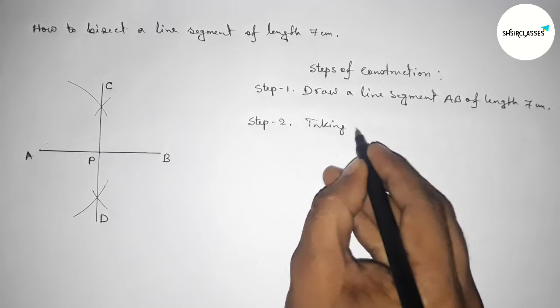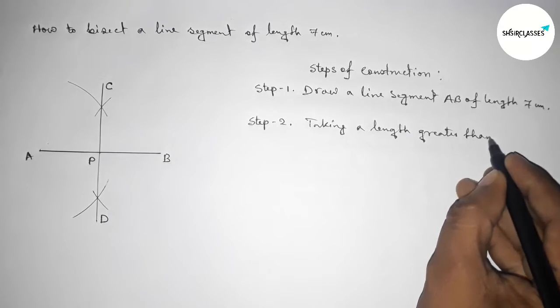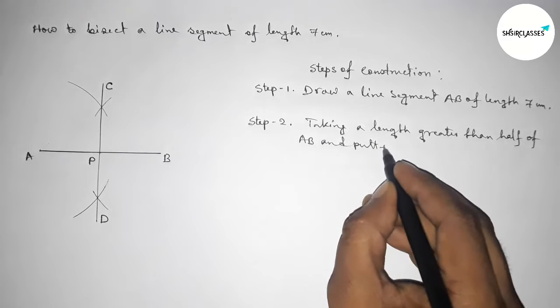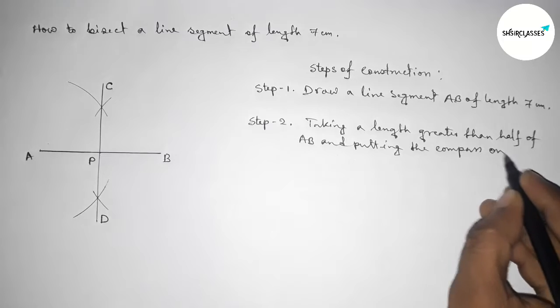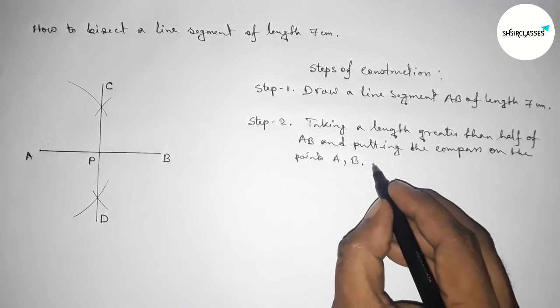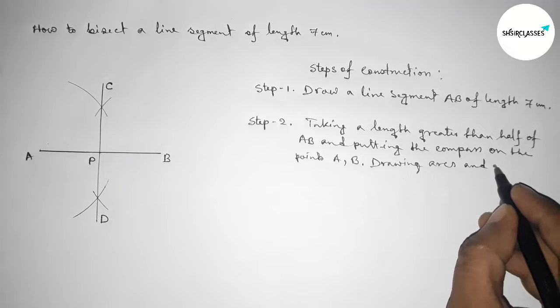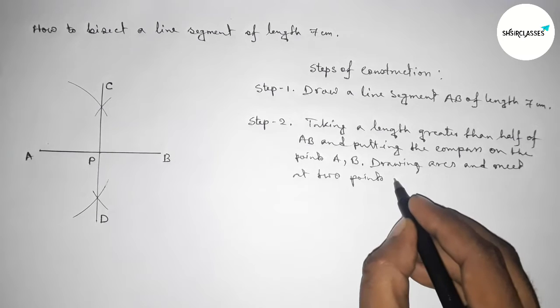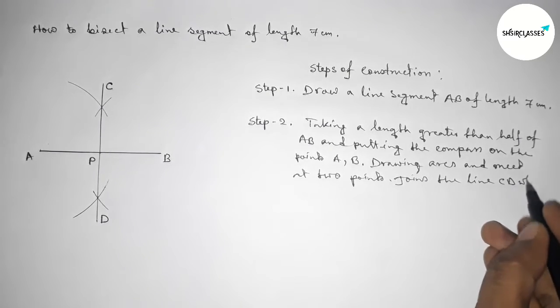Taking a length greater than half of AB by compass, putting the compass on the point A and B and draw arcs. And the arcs meet at two points. So now joining the line CD which bisects the line AB at the point P.